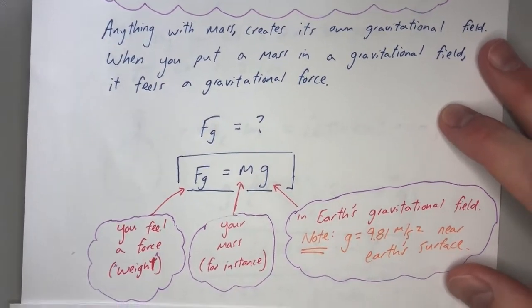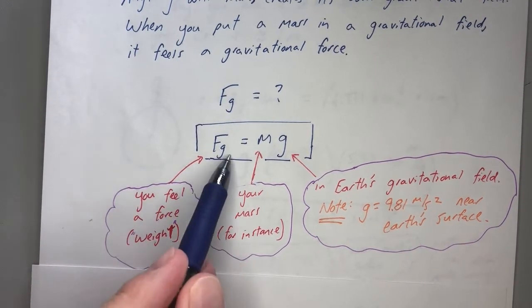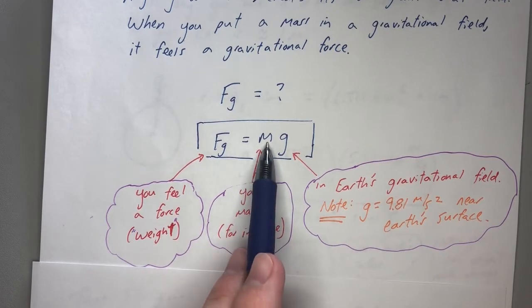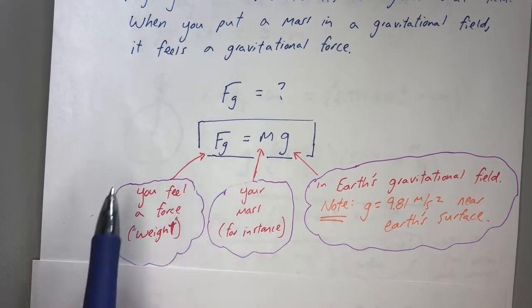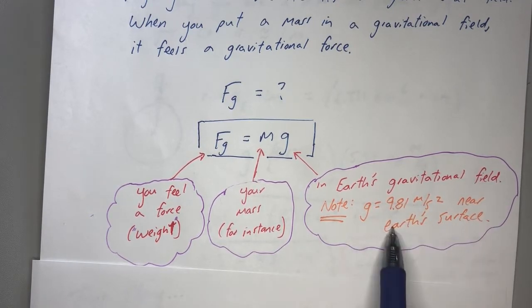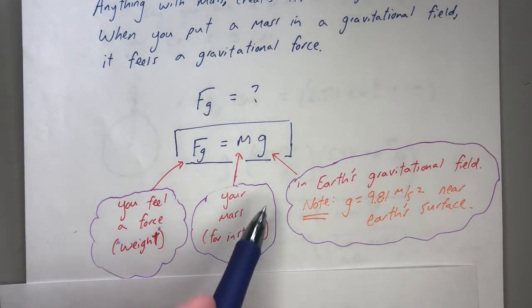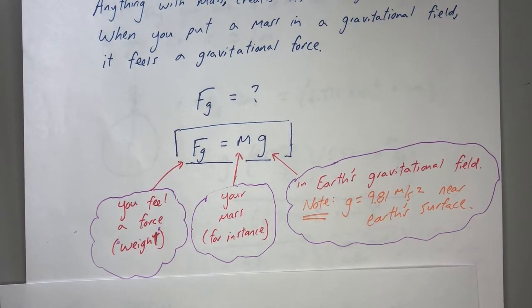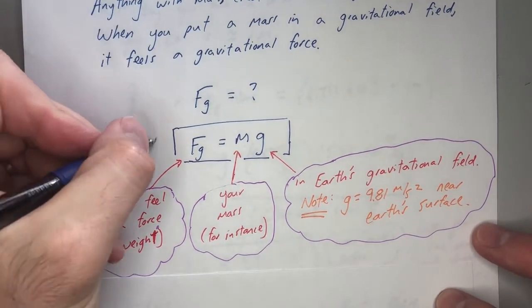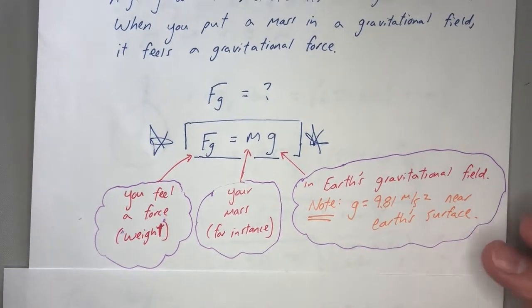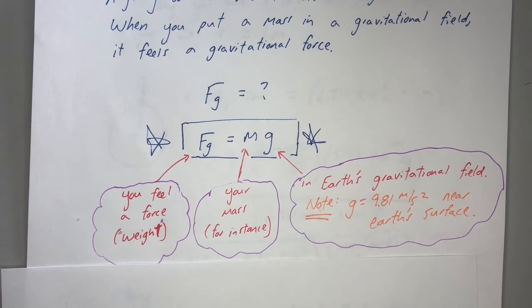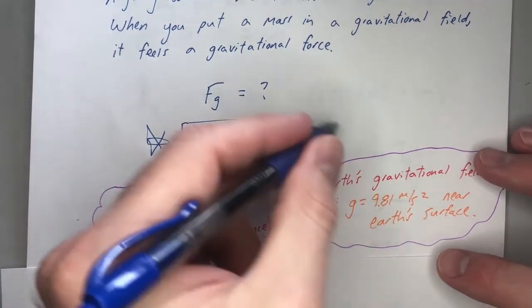So write this down: you feel a force — your weight, FG — equals your mass times 9.81, that's your weight. That's Earth's gravitational field. Note: 9.81 meters per second squared is near Earth's surface. Our approximation has worked just fine up to now, and most of the time FG equals mg will be fine. But when we talk about uniform circular motion and planetary motion, we're not near Earth's surface, so we have to get more complicated. On your AP test, 95% of the time FG equals mg is totally true — but if they mention planetary motion, you can't use this surface approximation.